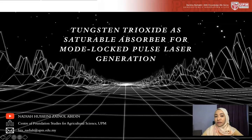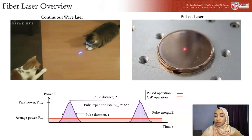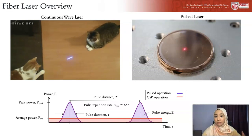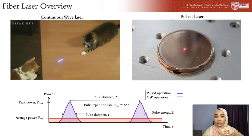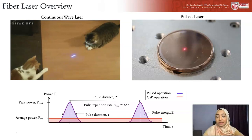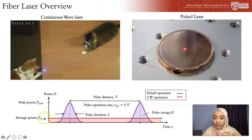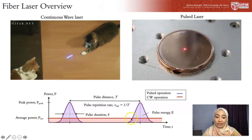Before I share about the investigation, I would like to briefly describe what fiber lasers are. Fiber lasers can be divided into two types of output. The first one is continuous wave laser, which means that the emission of light is continuous. As you can see here, the cats are playing with a laser pointer — when you turn it on, the light emission is continuous; it doesn't stop unless you switch it off. A continuous wave laser has an average power that is constant and continuously emitting over time.